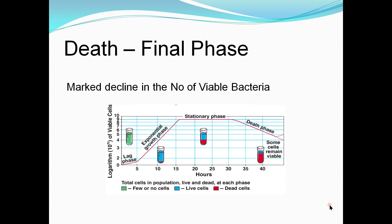The final phase is the death phase. As nutrients become less available and waste products increase, the number of dying cells continues to rise. The number of living cells decreases exponentially and population growth experiences a sharp decline. As dying cells lyse or break open, they spill their contents into the environment, making nutrients available to other bacteria. This helps spore-producing bacteria survive long enough for spore formation, and these spores are able to survive the harsh conditions of the death phase.